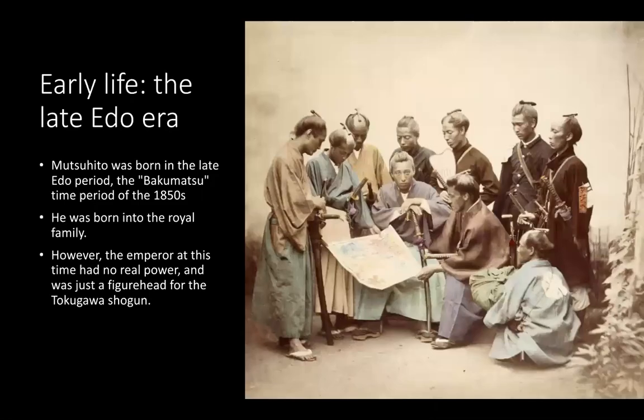Mutsuhito was born during the late Edo period, during the Bakumatsu period, which was in the 1850s. He was born into the royal family and was the son of the emperor, but this wasn't a prestigious position of real power, as power during that time was still held by the Tokugawa shogun. The samurai were the real source of power during the Edo period, not the royal family.